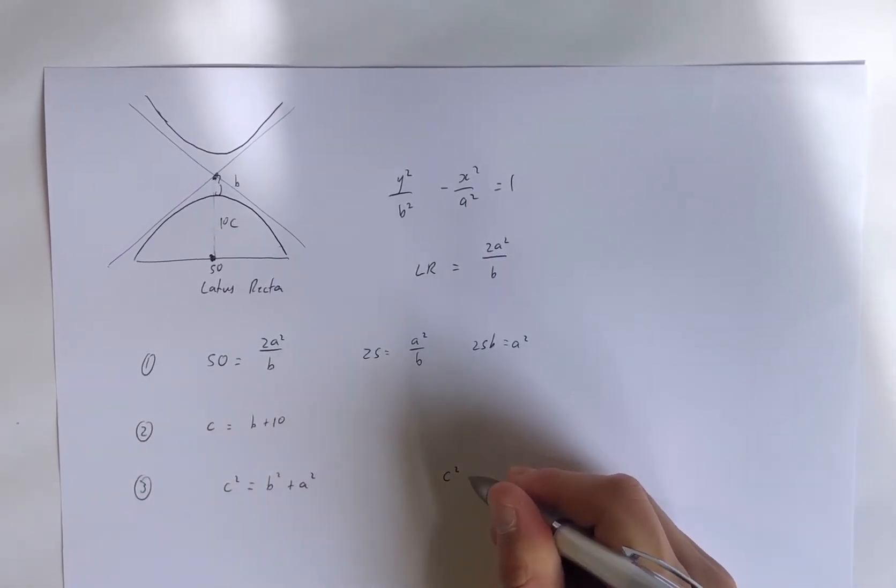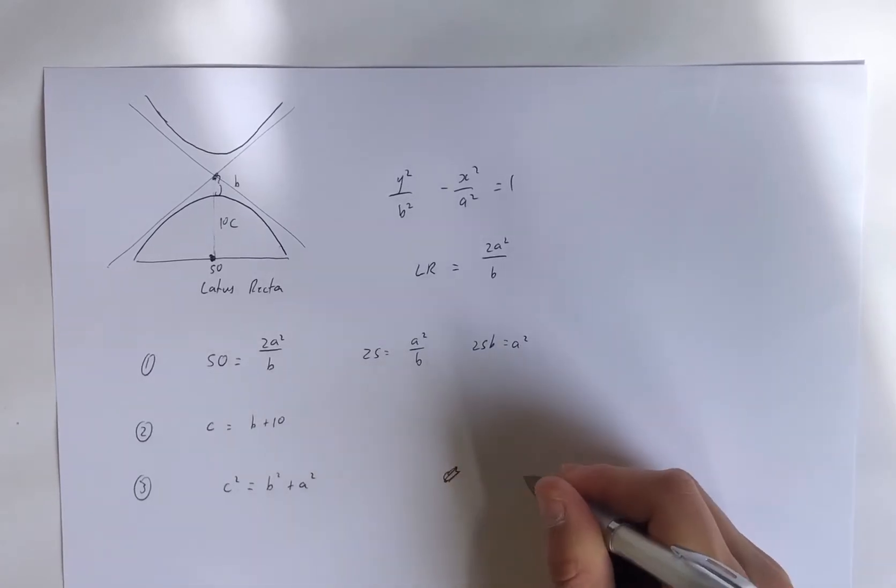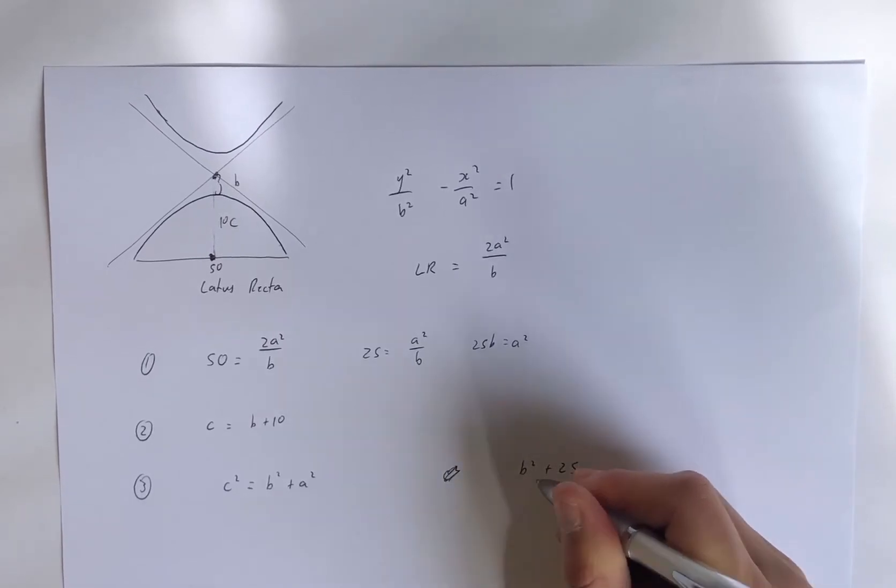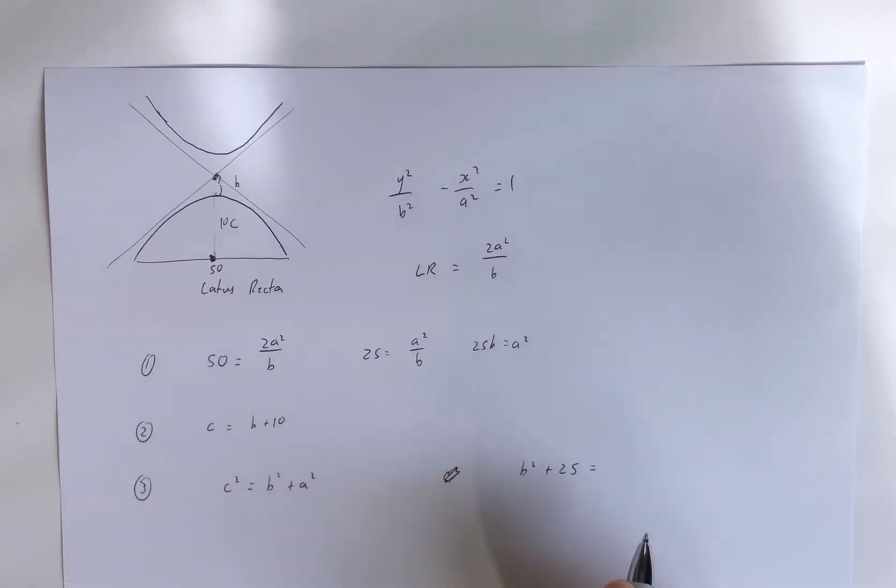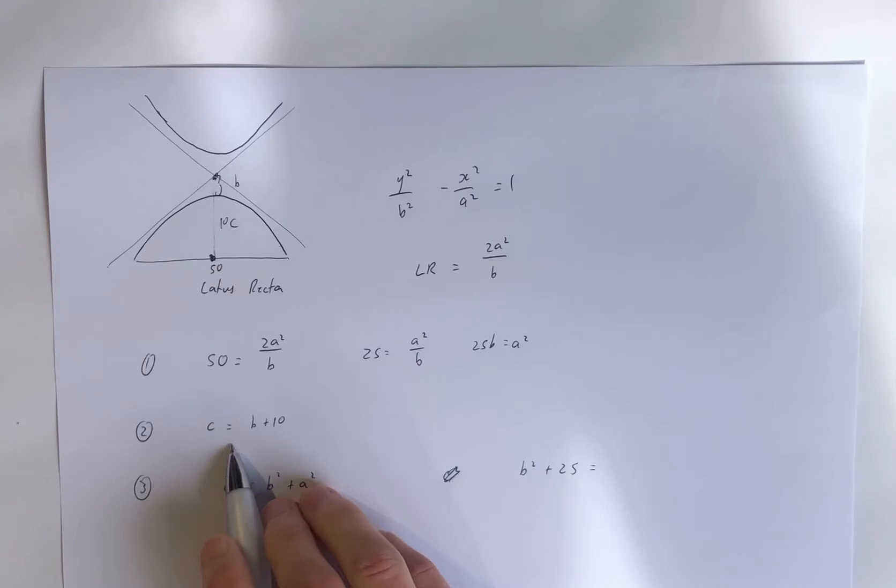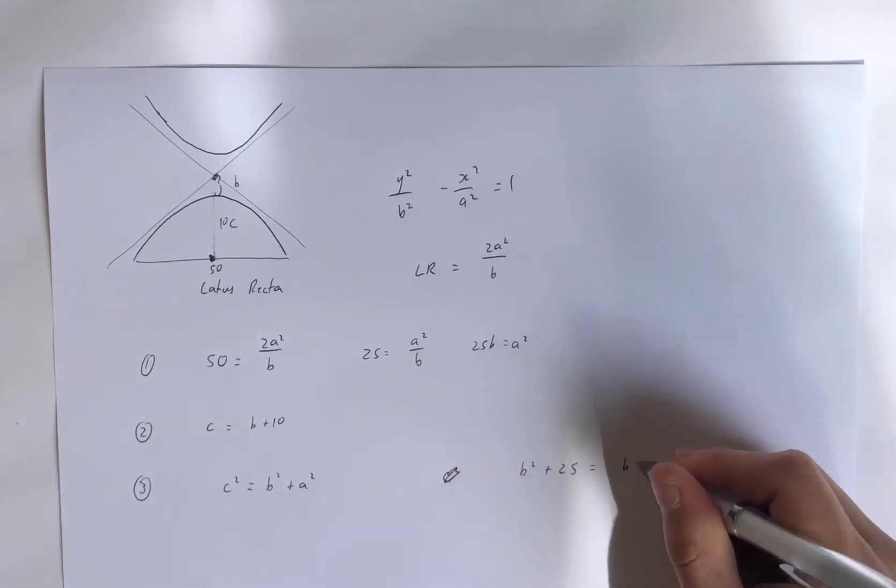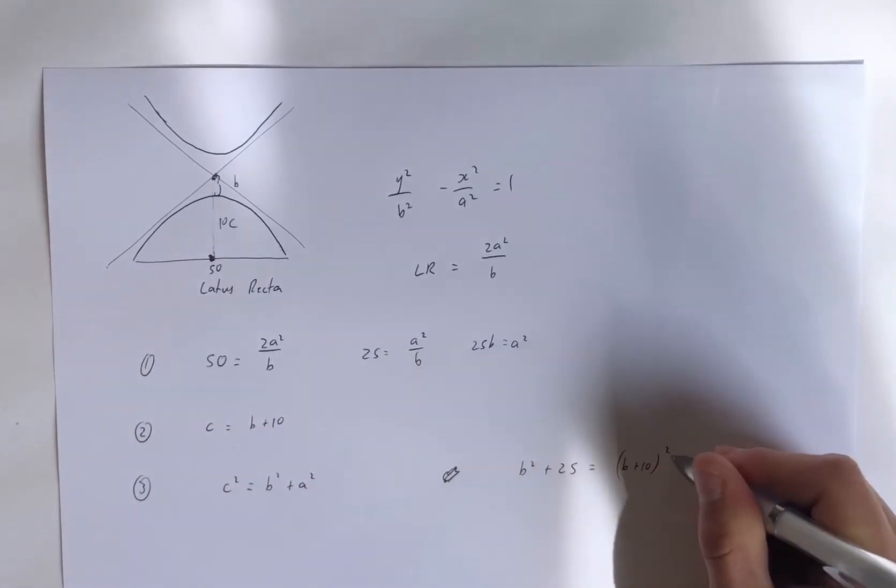There we have it, we've got a squared in terms of b. So c squared, sorry. So we can put a squared in for here. So we've got b squared plus 25b, and that's going to be equal to c squared, which is (b plus 10) squared.